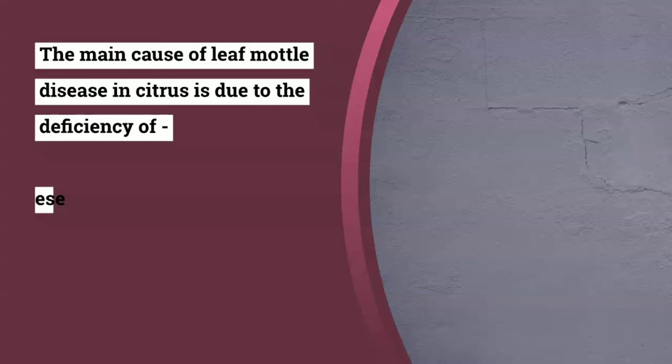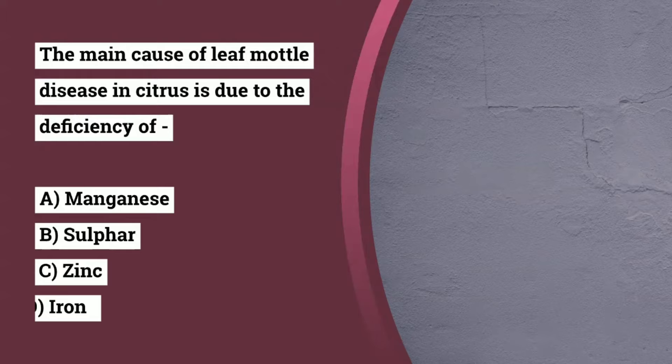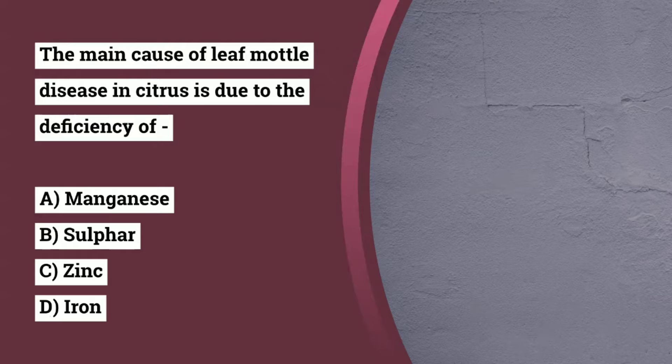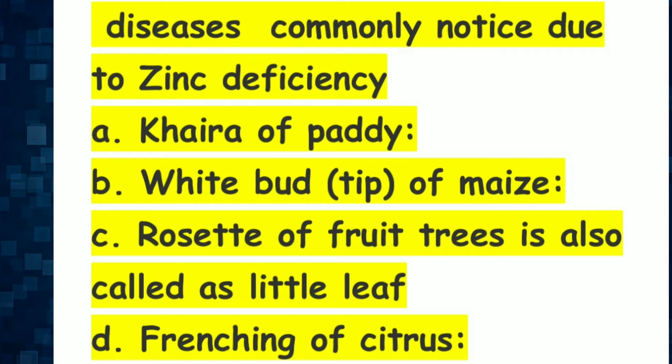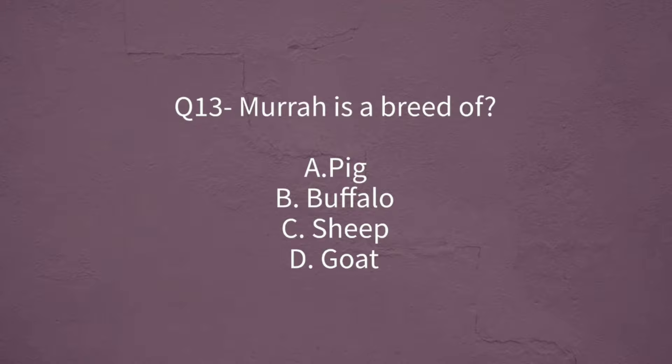Question number 12: the main cause of leaf mottle disease in citrus is due to deficiency of which element? The options are manganese, sulfur, zinc, or iron. The correct answer is zinc. Diseases commonly noticed due to zinc deficiency are Khaira of paddy, white bud of maize, rosette of fruit trees, also called little leaf, and frenching of citrus.